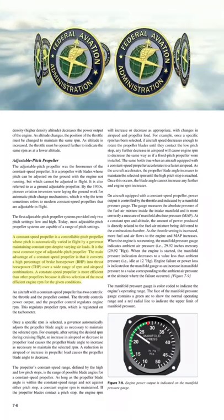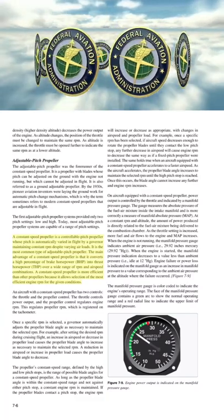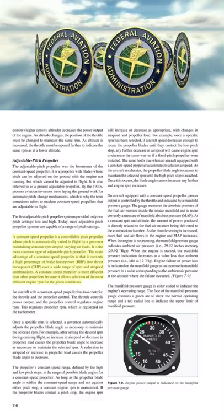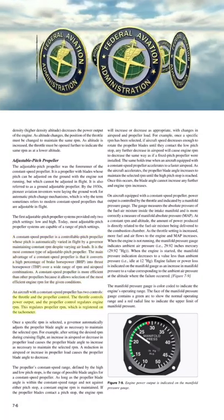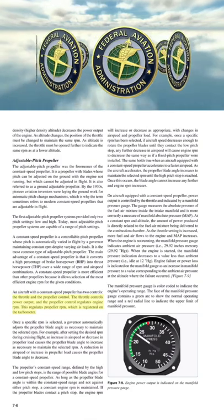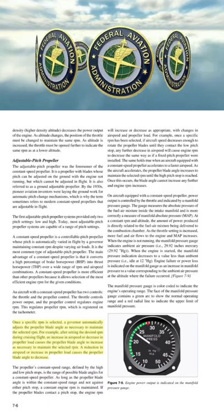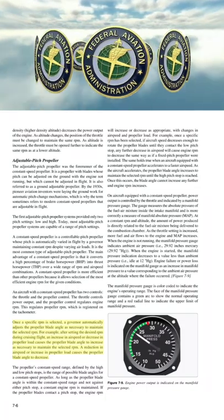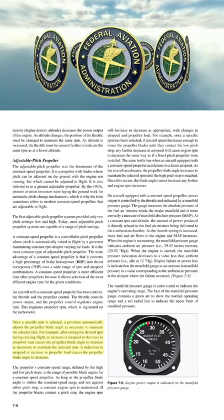The main advantage of a constant speed propeller is that it converts a high percentage of brake horsepower into thrust horsepower over a wide range of RPM and airspeed combinations. An aircraft with a constant speed propeller has two controls: the throttle and the propeller control. The throttle controls power output and the propeller control regulates engine RPM on the tachometer. Once a specific RPM is selected, a governor automatically adjusts the propeller blade angle as necessary to maintain that RPM. For example, an increase in airspeed or decrease in propeller load causes the propeller blade angle to increase to maintain the selected RPM.